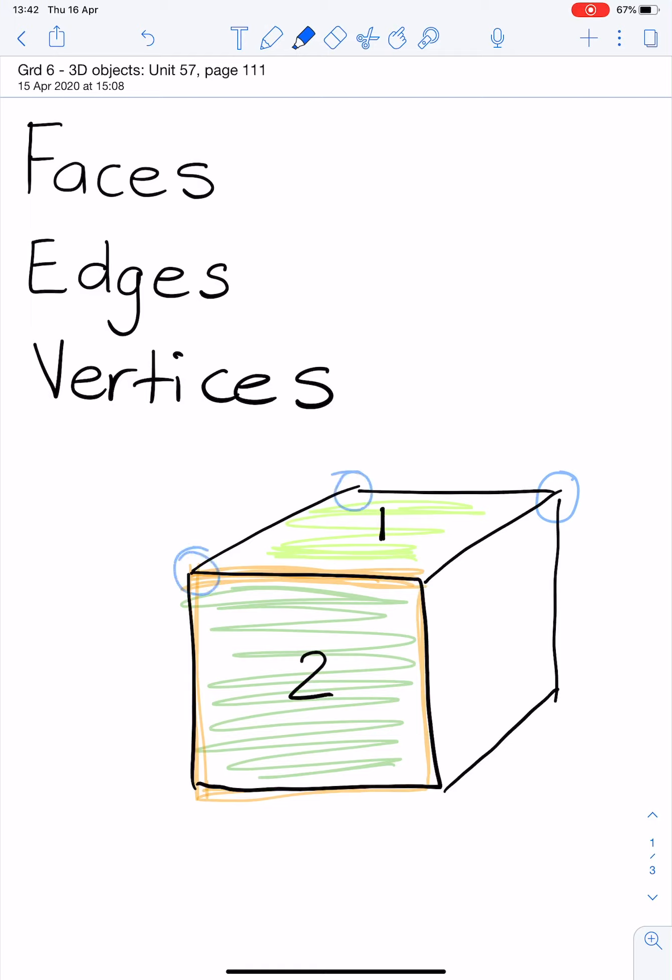So, it's that, that, that, that, and that. So, a vertice is where two edges meet. That edge and that edge meet at that corner. So, that is a vertice.